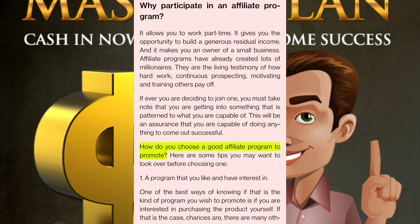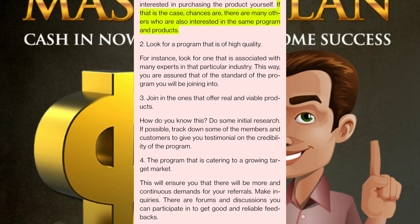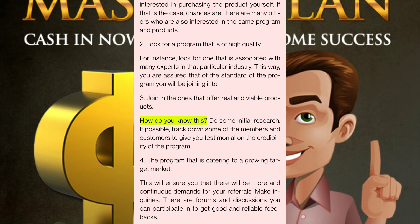How do you choose a good affiliate program to promote? One: choose a program that you like and have interest in. One of the best ways of knowing if that is the kind of program you wish to promote is if you are interested in purchasing the product yourself. Two: look for a program that is of high quality — for instance, look for one that is associated with many experts in that particular industry. Three: join ones that offer real and viable products. Do some initial research — if possible, track down some members and customers to give you testimonials on the credibility of the program. Four: choose a program catering to a growing target market to ensure more continuous demands for your referrals.